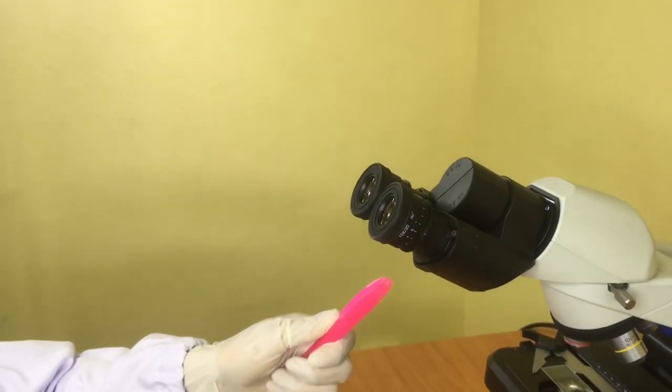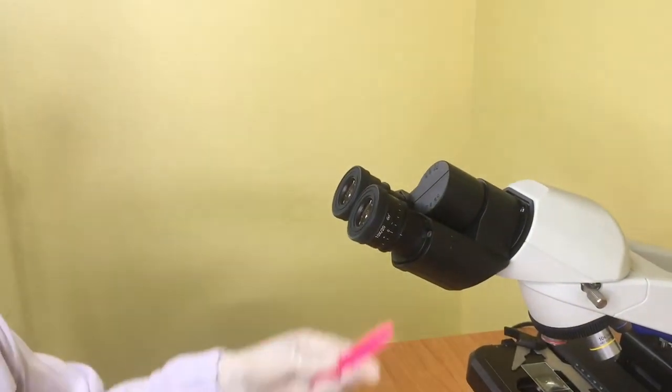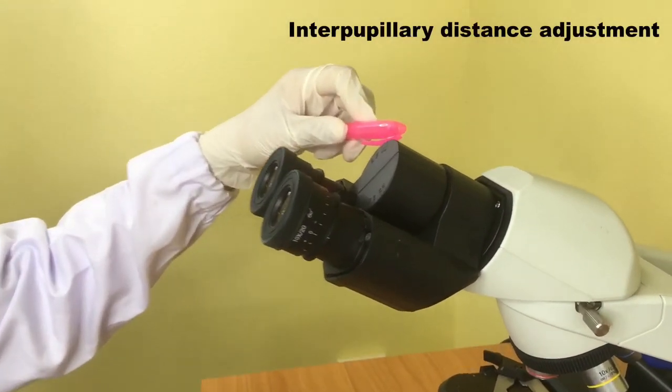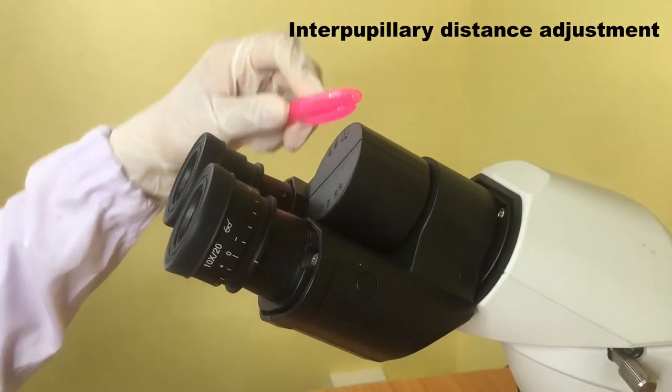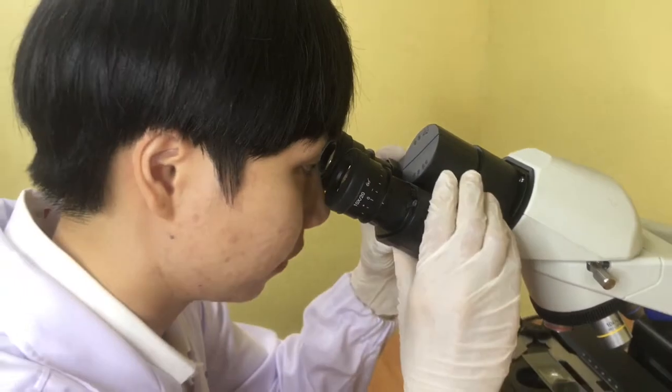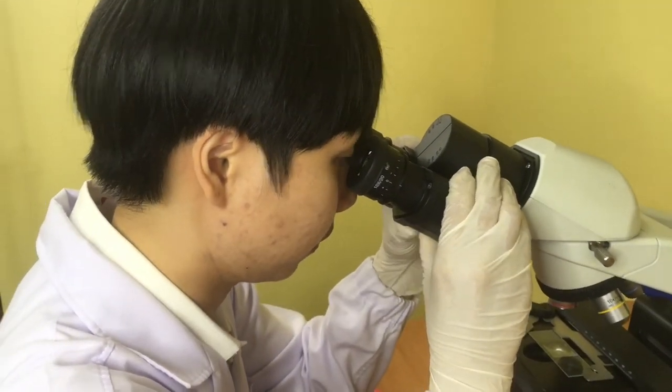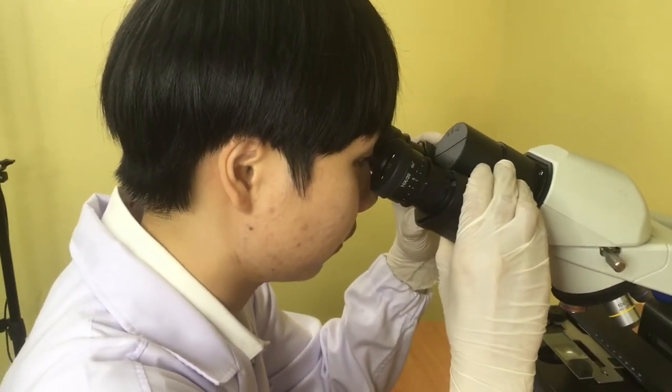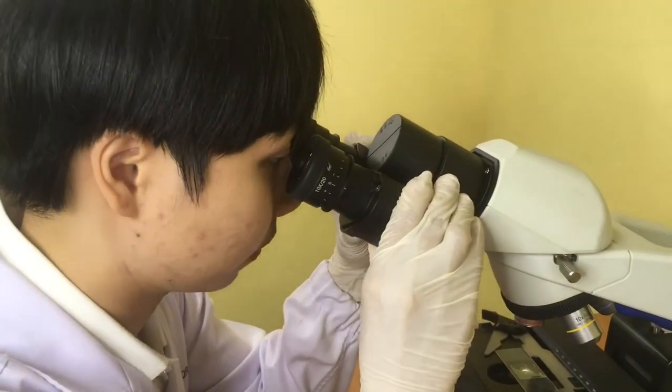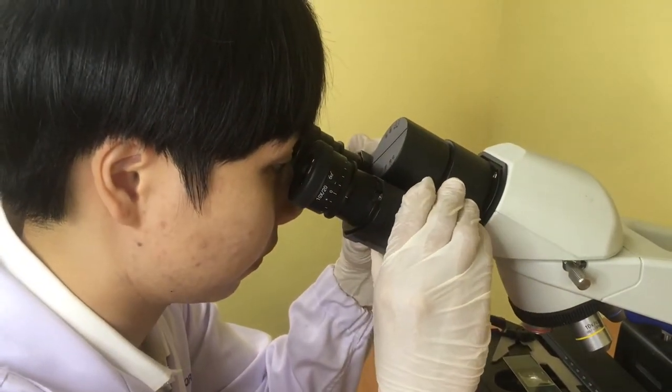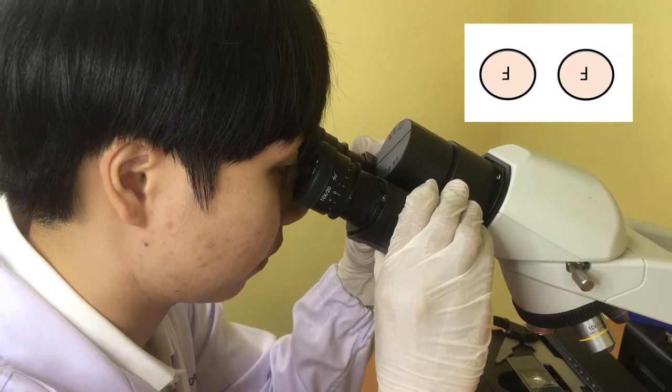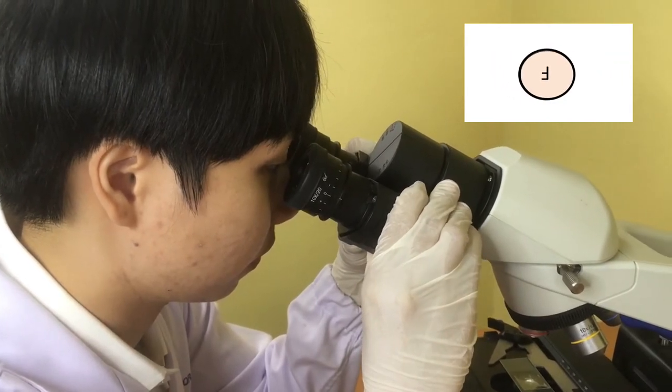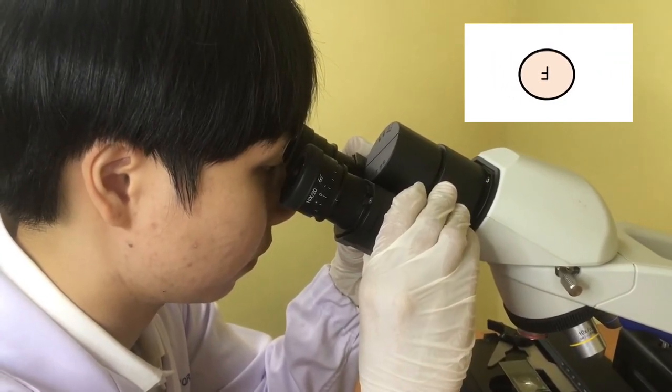Here is interpupillary distance adjustment. If you look through the ocular lens and see two separate images, you should make an adjustment. By adjusting the interpupillary distance, the two separate images should merge into one to allow you to see one sharp image.